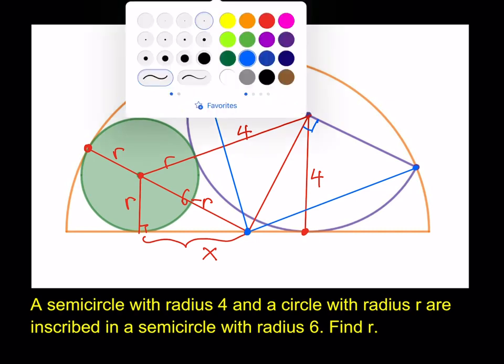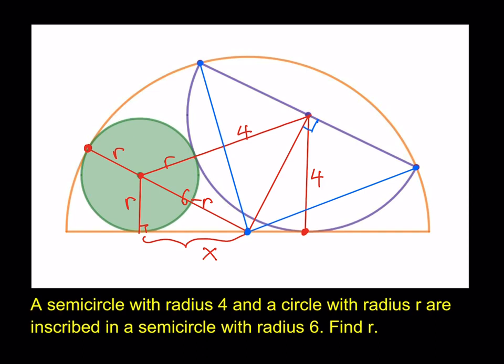For example, this one is going to be the blue line, long one. Here is going to be the radius of the larger semicircle, which is 6. So this is 6. Nice. And this is 4. Why? Because this is the radius of the smaller semicircle from here. So I know the hypotenuse, and I know one of the legs. So I can find the other leg. And it's Pythagorean theorem, basically.